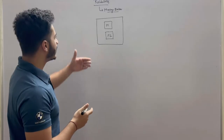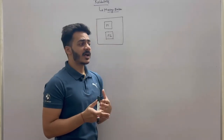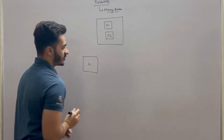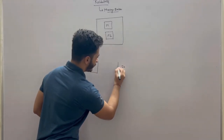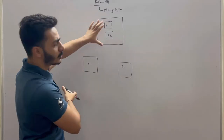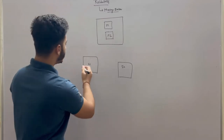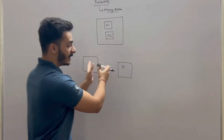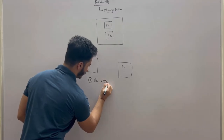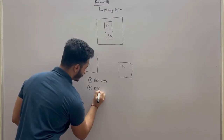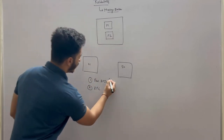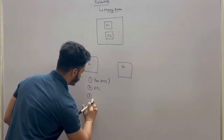One more use case where this message broker plays a very important role is in a microservice kind of architecture. Suppose you have one service running over one server and another service running over a different server. If these two services are running on different servers, how will you communicate between these two services? One way is using REST APIs. Second is RPC, which is remote procedure calls, but we are not going to cover that. And the third way is using a message broker.